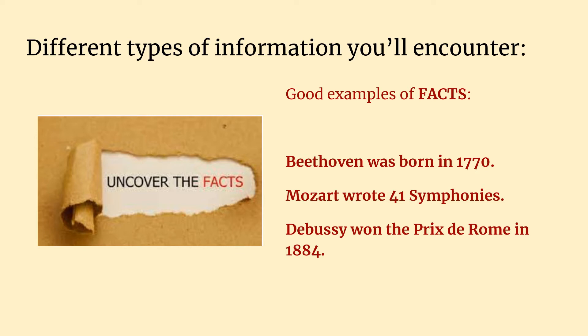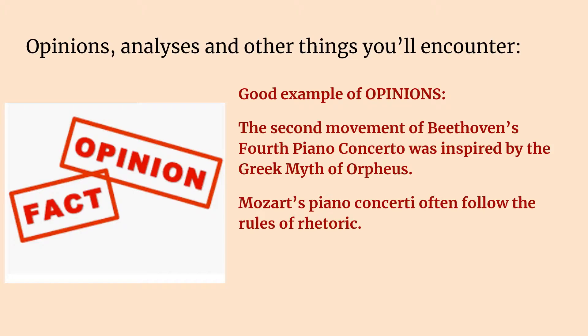When doing your research, you will often encounter information that you didn't know before. Sometimes that information is simply factual and available in multiple sources. For instance, before working on your paper about Beethoven's Fifth Symphony, you may not have known where and when Beethoven was born. But while reading, you find out that he was born in 1770 in Bonn, Germany. Other examples of facts are that Mozart wrote 41 symphonies or that Debussy won the Prix de Rome in 1884. These are all facts, readily available to any scholar familiar with the subject. These are called common knowledge facts.